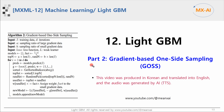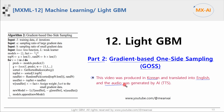This is part 2 of a series on LightGBM. In this video, we will look at the GOSS algorithm called gradient-based one-side sampling. This video is produced in Korean and translated into English, and the voice was generated using AI text-to-speech.